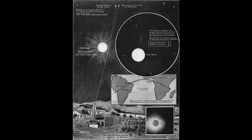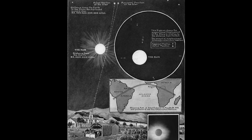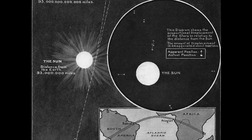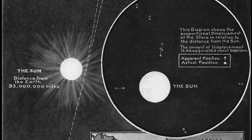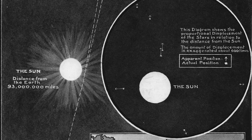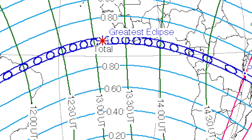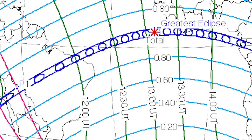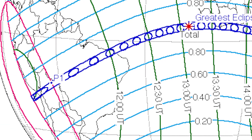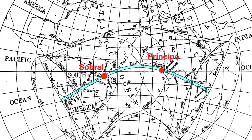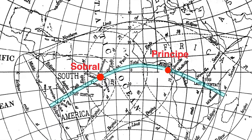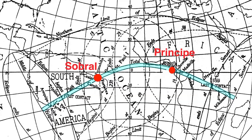If general relativity was correct, he should be able to see stars that would ordinarily be blocked by the sun — if it was real, the light would be bent around the sun. On May 29th, 1919, a total solar eclipse traced a path over South America, the Atlantic Ocean, and Africa. Two sets of astronomers from observatories in Greenwich and Cambridge traveled to photograph the eclipse. One team was stationed in Sobral, Brazil, and the other team on the island of Príncipe, off the coast of Africa.